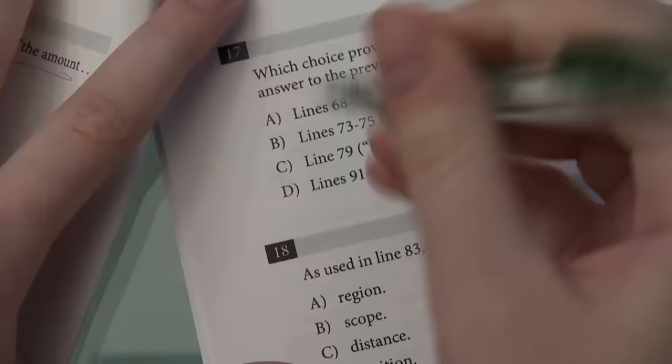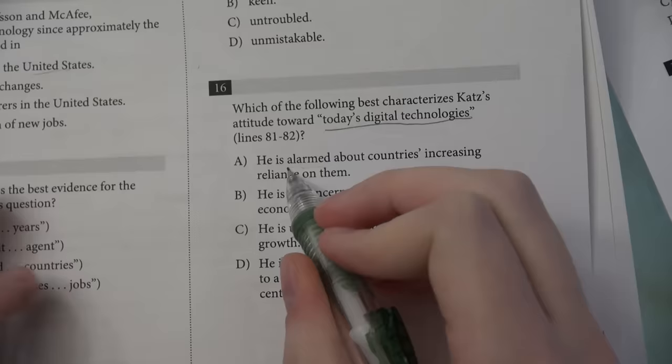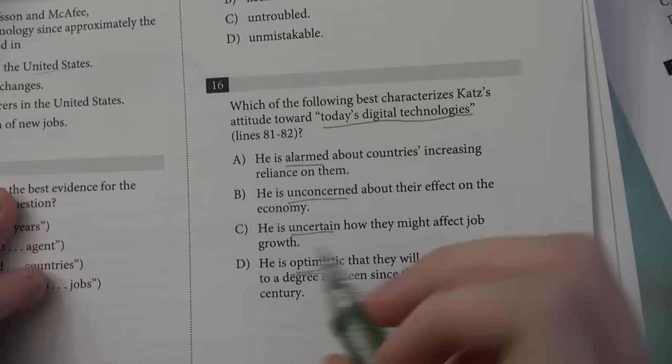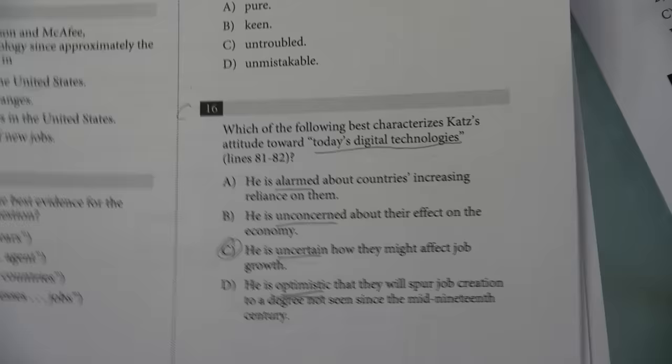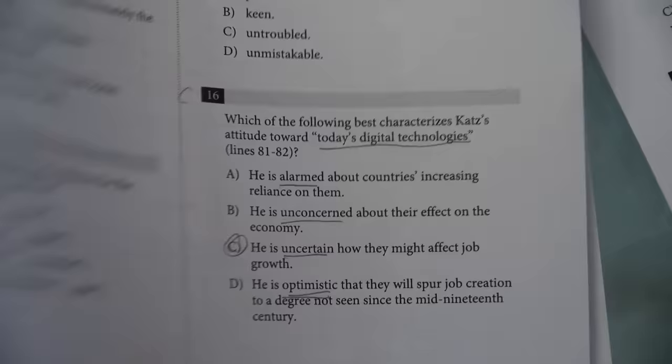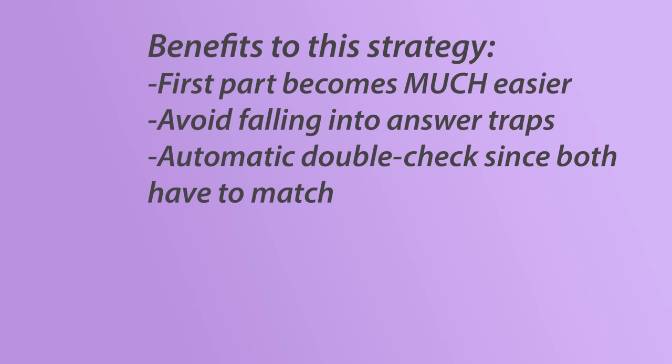Now, to double check, we make sure that one of the answer choices of the first question goes along with this. They say, he's alarmed, unconcerned, uncertain, or optimistic. And we know he's uncertain from the quote we selected. See how easy it could have been to fall in the trap of selecting the 19th century one, though, since the quote also said that, even though it completely didn't address the question? I love doing them this way, since it guarantees you're not assuming anything, it makes the first part so much easier than it normally is, and then you can also have that check at the end, since both the questions need to match. Note that sometimes the test will bypass the first question completely and just combine them into one where you pick the right quote, but this strategy works there too.